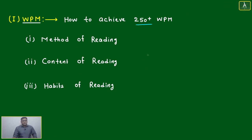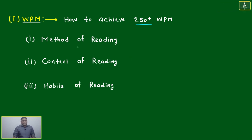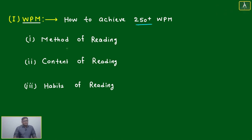To achieve 250 plus WPM, we have to work on three areas. Listen carefully — this video will be uploaded on YouTube so you can watch it again. If it goes directly to your brain and you are able to understand the main point, it will be easy to implement. Three areas you have to work on to improve your WPM.